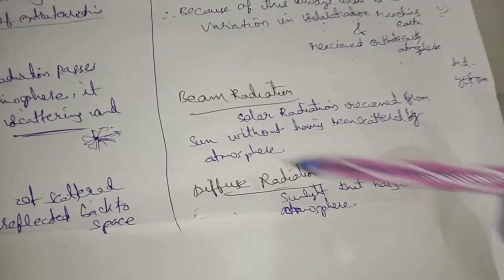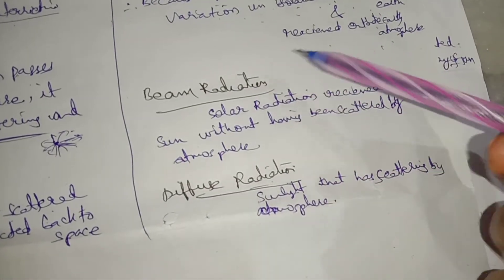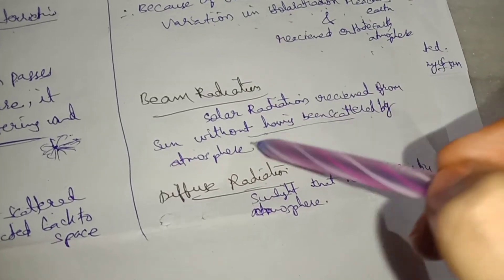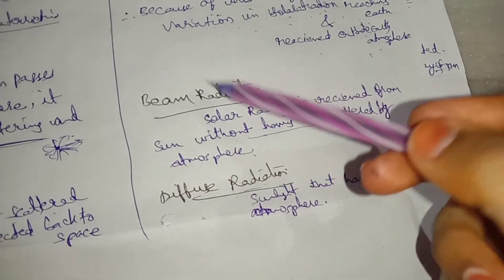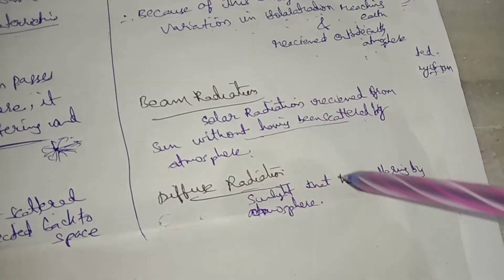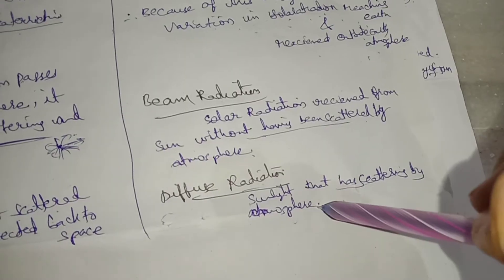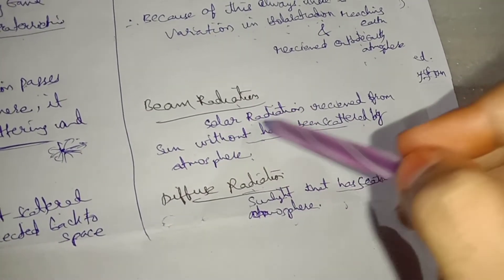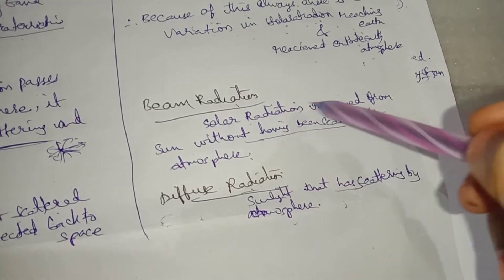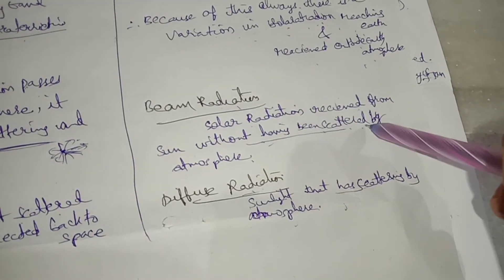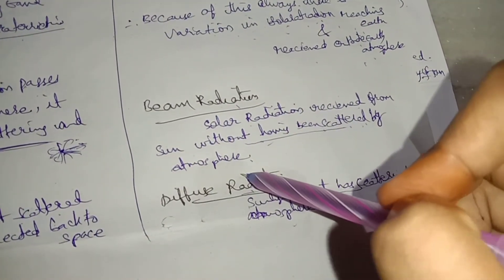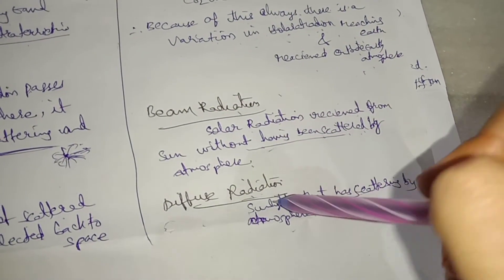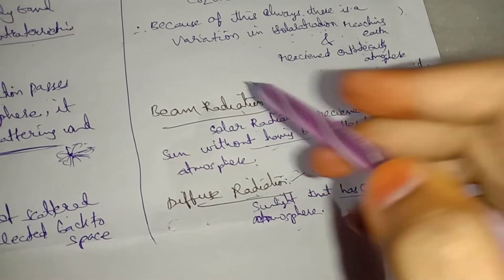Diffuse radiation and beam radiation are general terms. Solar radiation received from the sun without having been scattered by the atmosphere is beam radiation, whereas the opposite — radiation that has been scattered in the atmosphere — is diffuse radiation.